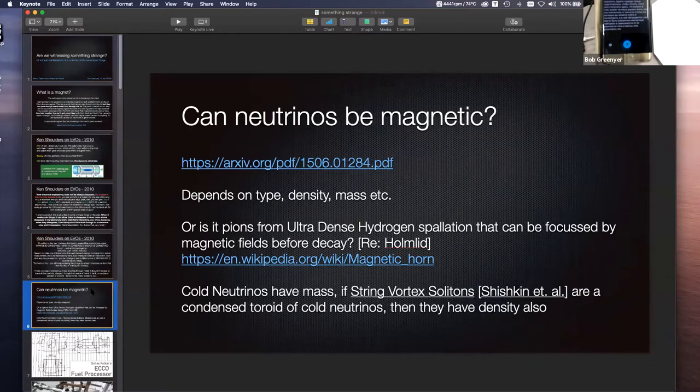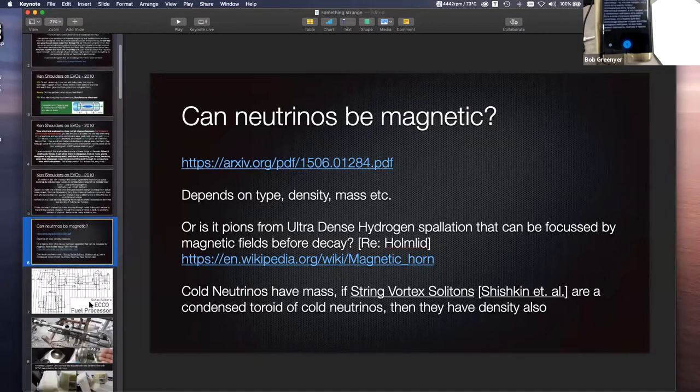You can see pions from distillation of ultra-dense hydrogen, according to Holmle. And pions can be focused by magnetic fields because myself and other authors have been able to sort of guide these things using magnets.